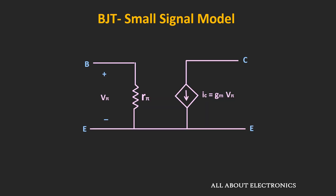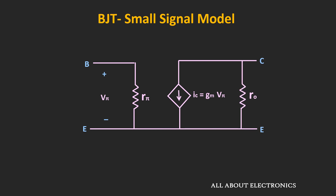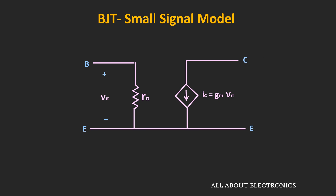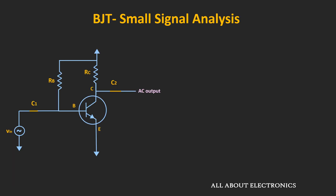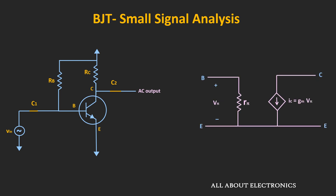This is the small signal model of the BJT. If we consider the early effect, we also need to include the output resistance in this small signal model. But for now, let's assume that the output resistance is infinite, and replace the BJT by the small signal model.